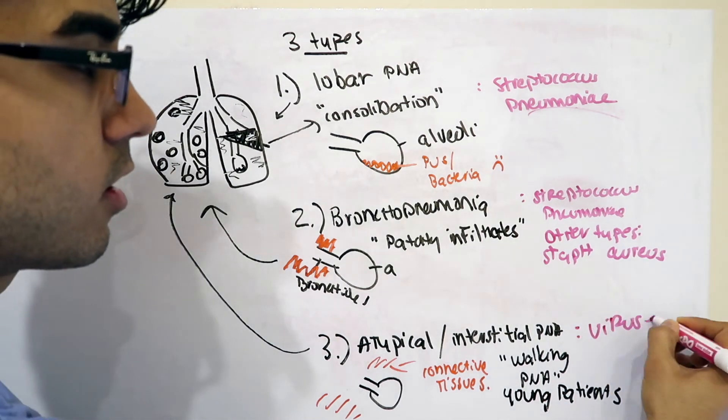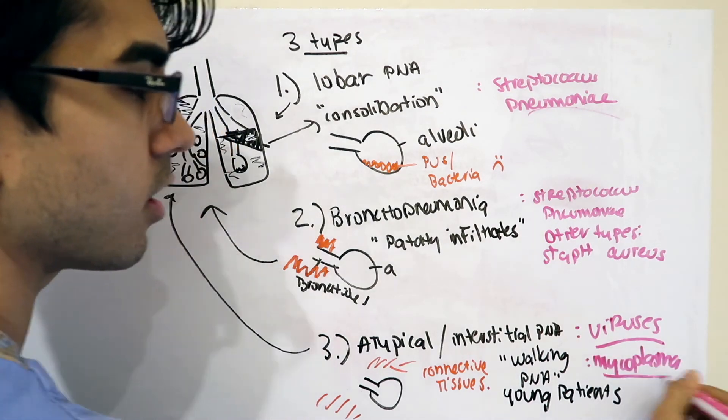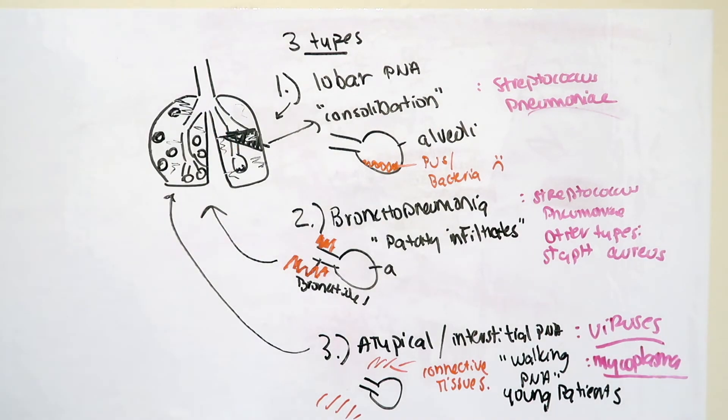The number one most causative pathogen are viruses, ranging from a whole host of viruses between influenza and RSV. The next most common pathogen being bacteria called mycoplasma, which is known to cause a walking pneumonia in younger patients.